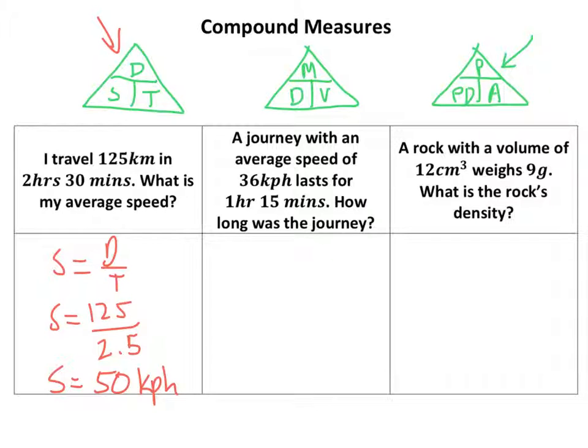Next one. A journey with an average speed of 36 kilometers per hour lasts for an hour and 15 minutes. Now again, I'm using this one. And it says how long was the journey, so distance. I cover the D and that equals speed times time. Actually, I'll just do that in a different color. There we go. Distance equals speed times time.